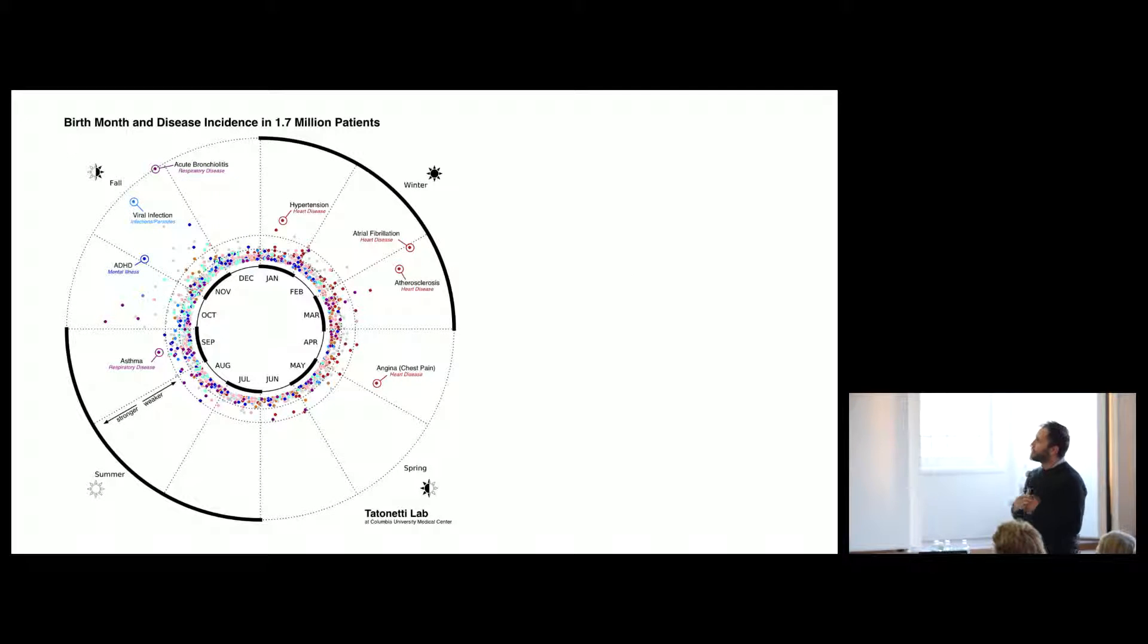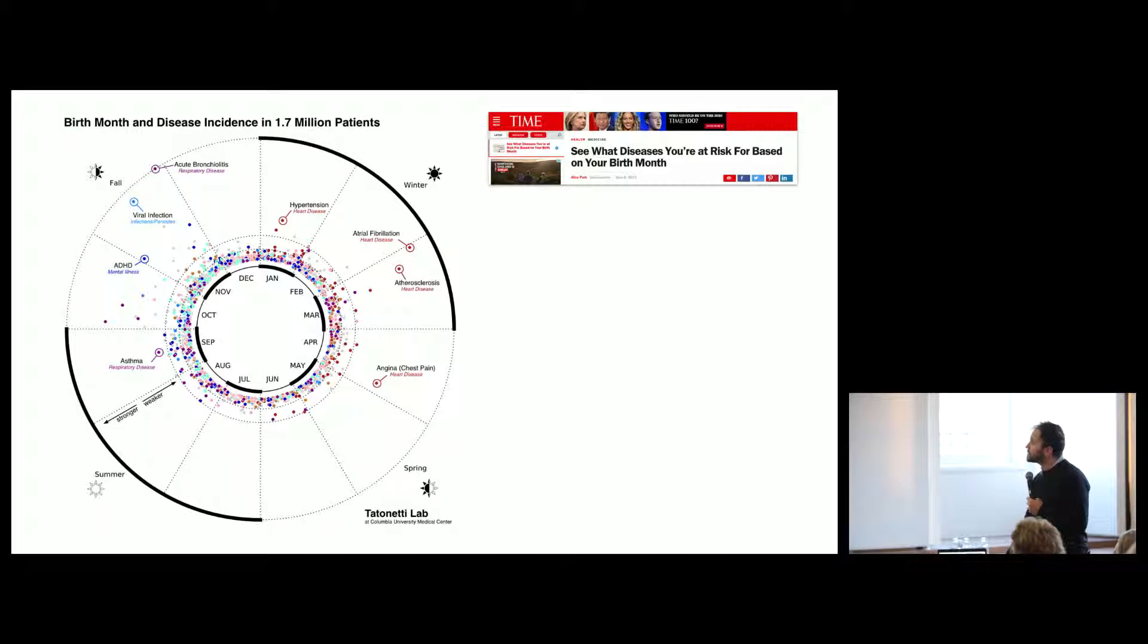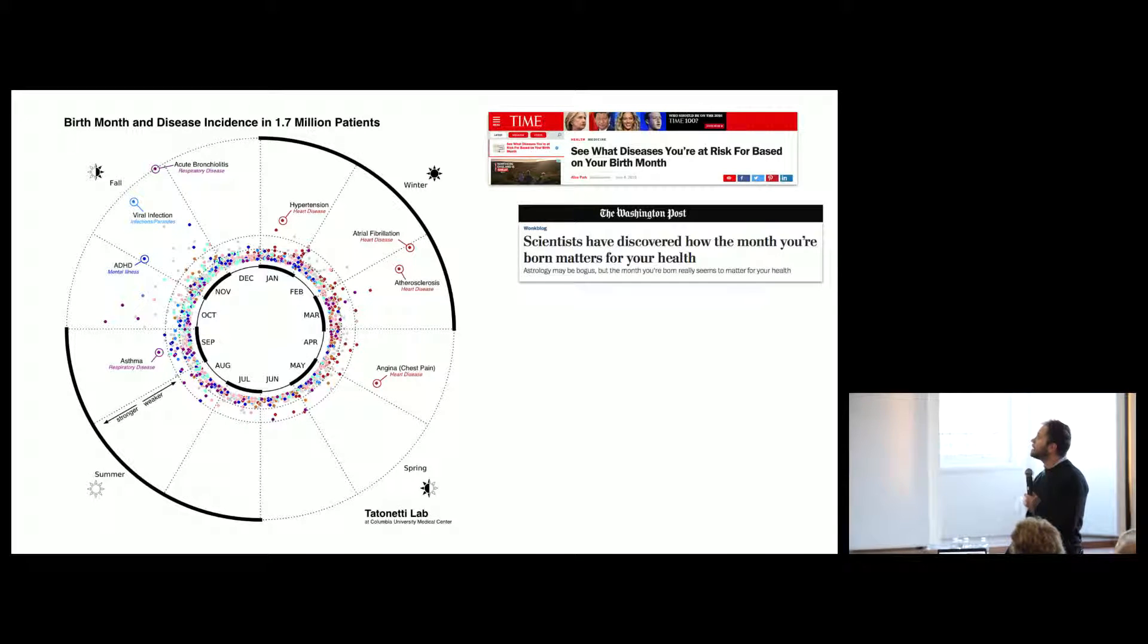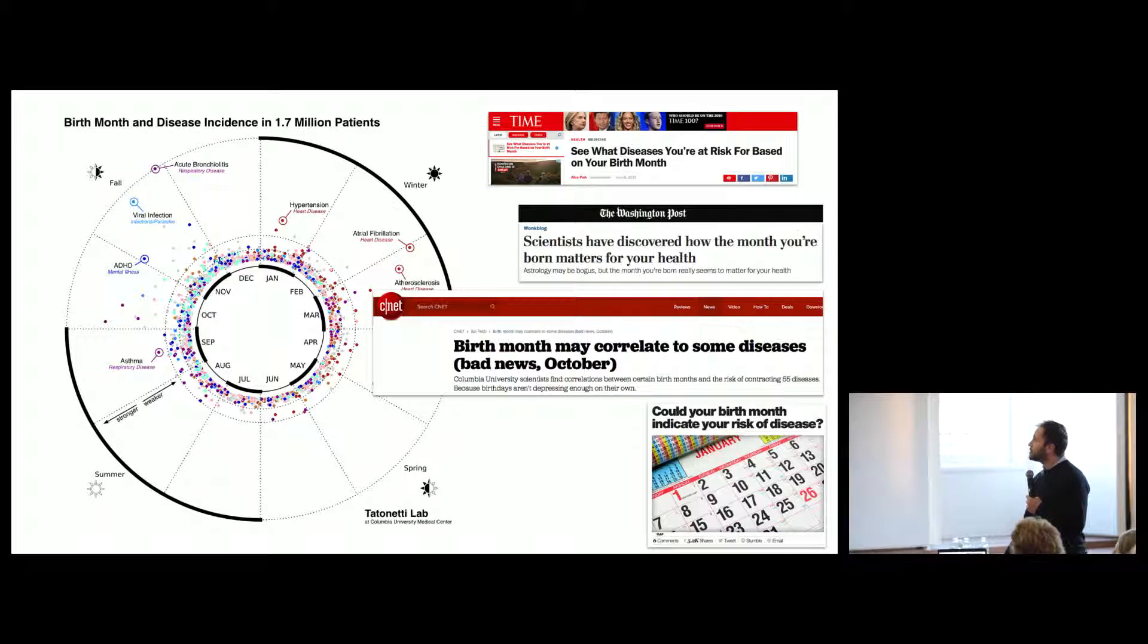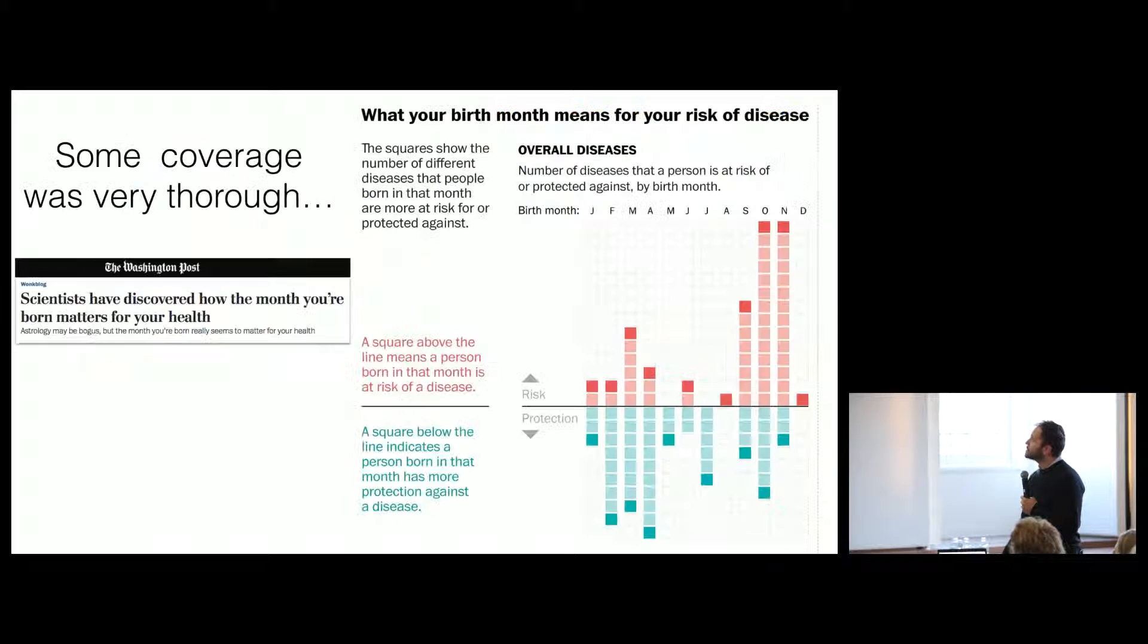And then this is the one that we created for the media which got picked up by a lot of different sources which represents all of our findings. So there's 1,600 different diseases represented. Almost 2 million patients represented. It was reproduced across the internet at a variety of different news outlets which cover the study.